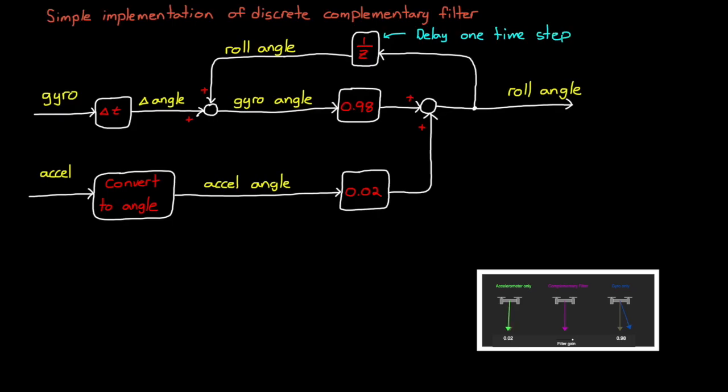This new angle is the estimated roll angle that we feed back at the next time step. By believing the gyro more, we're allowing the short term speed and agility to make it through, but we're nudging it back towards the absolute down direction over time to keep the angle from wandering off. This is how we're getting the long term stability of the accelerometer.